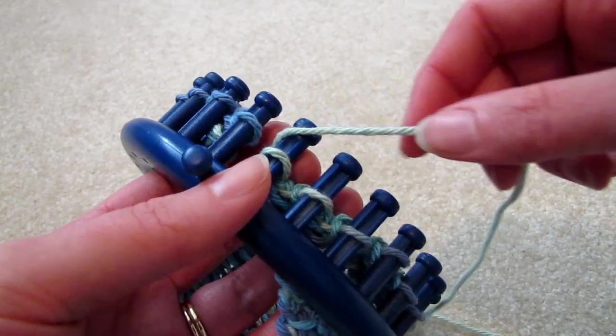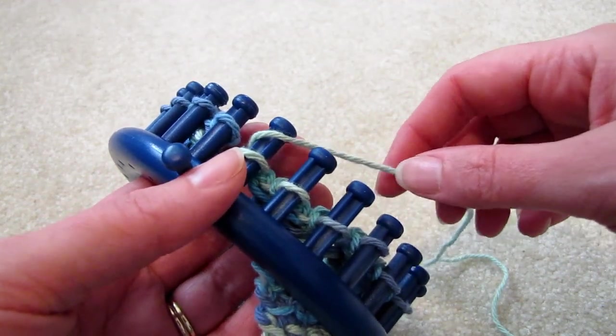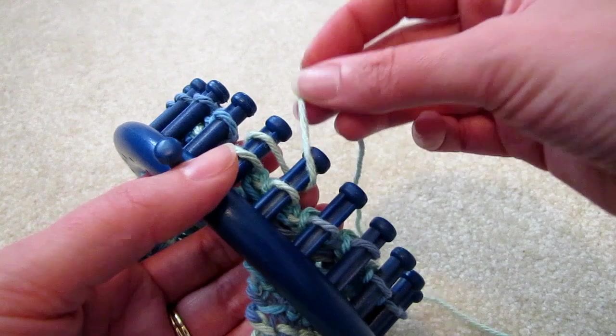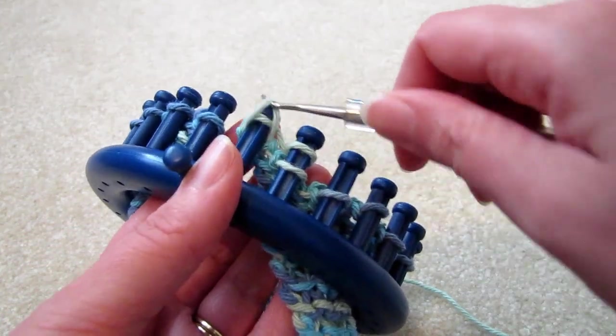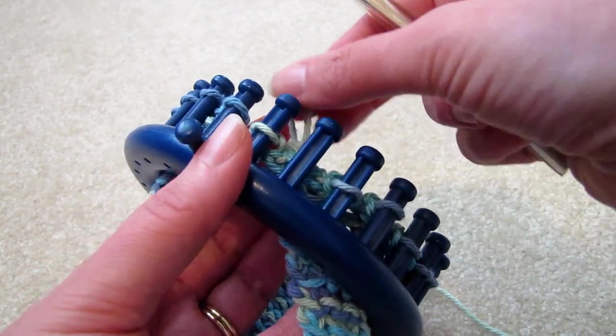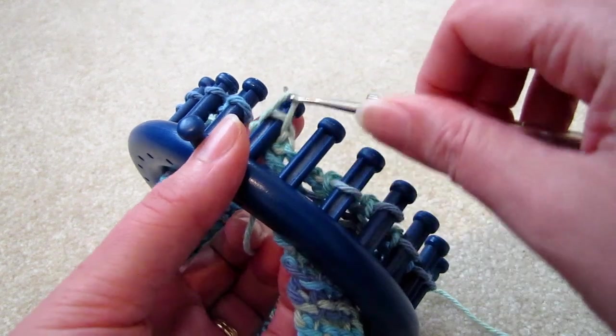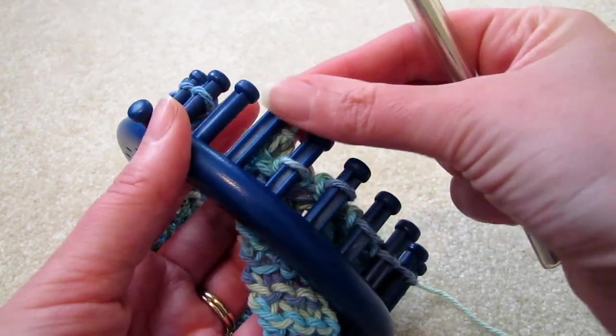We have a choice. We need to cast off using the chain method, so we can use the crochet hook, or we can use the knit method. I prefer the knit method, but that's up to you of course. They're both explained in tutorials.